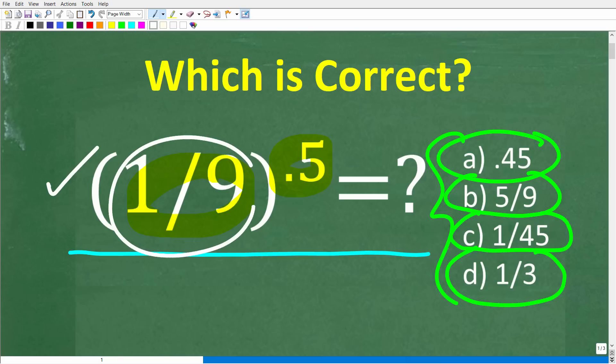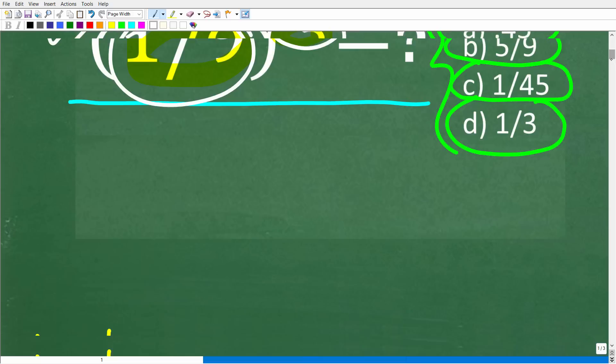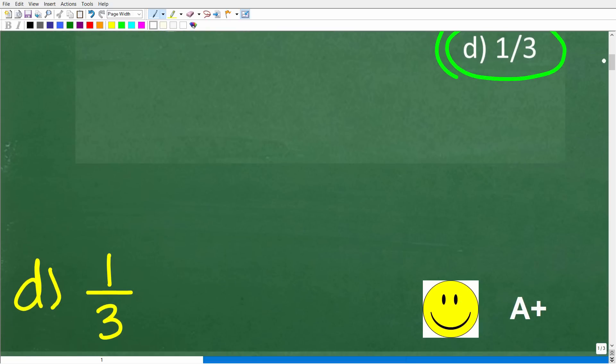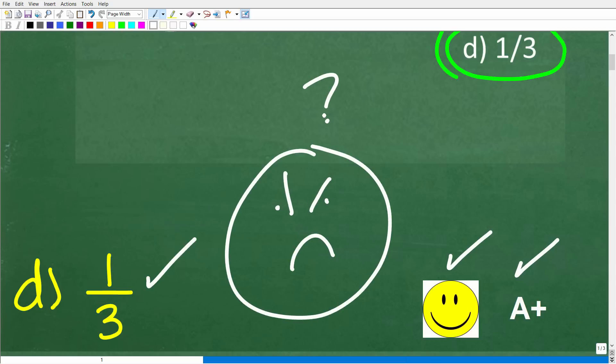So once again, we have this fraction to this exponent. What is the answer? Well, the correct answer is D, 1/3. So if you got this right and you did not use a calculator, you are definitely going to get a happy face and A+. And if you're like Mr. YouTube Math Man, I thought this was easy, but I guess I don't know what's going on. Can you teach me? Well, I definitely can.